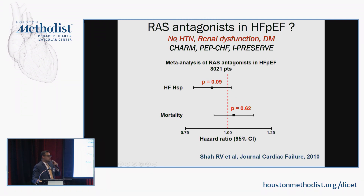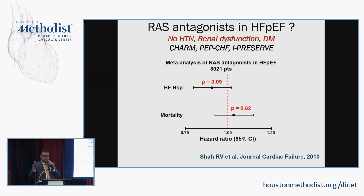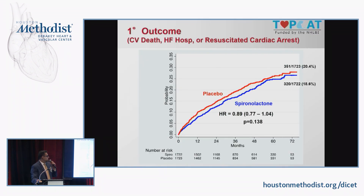In a meta-analysis of RAS antagonism — both ARBs and ACE inhibitors — there is no benefit on reducing heart failure hospitalization or mortality in heart failure with preserved ejection fraction.